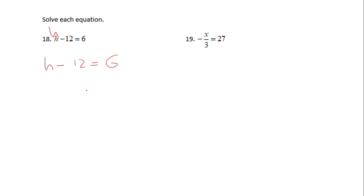We need to do the inverse operation. Here we can see subtraction, so obviously the inverse operation is addition. We're gonna add 12 on both sides. 6 plus 12 is 18, and that's it. Pretty simple equation. Let's take a look at the second one.